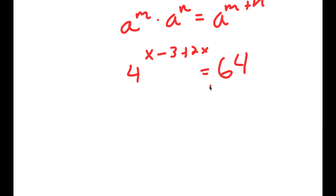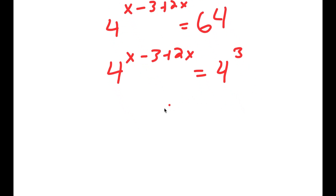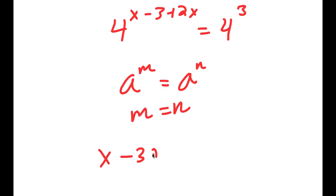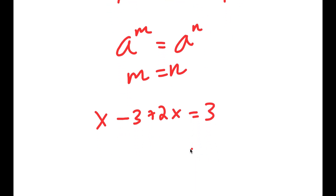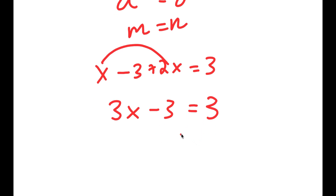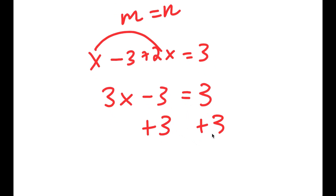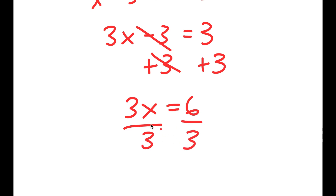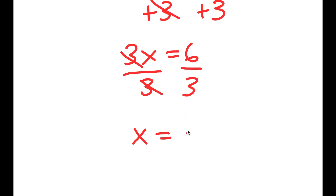Now 64 equals 4 to the power of 3. So I have 4 to the power of x minus 3 plus 2x is equal to 4 to the power of 3. If a to the power of m equals a to the power of n, then m equals n. So x minus 3 plus 2x is equal to 3. Combining like terms, x plus 2x is 3x, so 3x minus 3 equals 3. Adding 3 on both sides gives 3x equals 6, and dividing by 3 gives x equals 2.